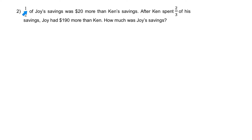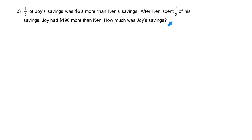Question 2: Half of Joy's savings was $20 more than Ken's savings. After Ken spent two-thirds of his savings, Joy had $190 more than Ken. How much was Joy's savings? We're going to draw it forward one sentence, one piece of information at a time, all the way to the end.